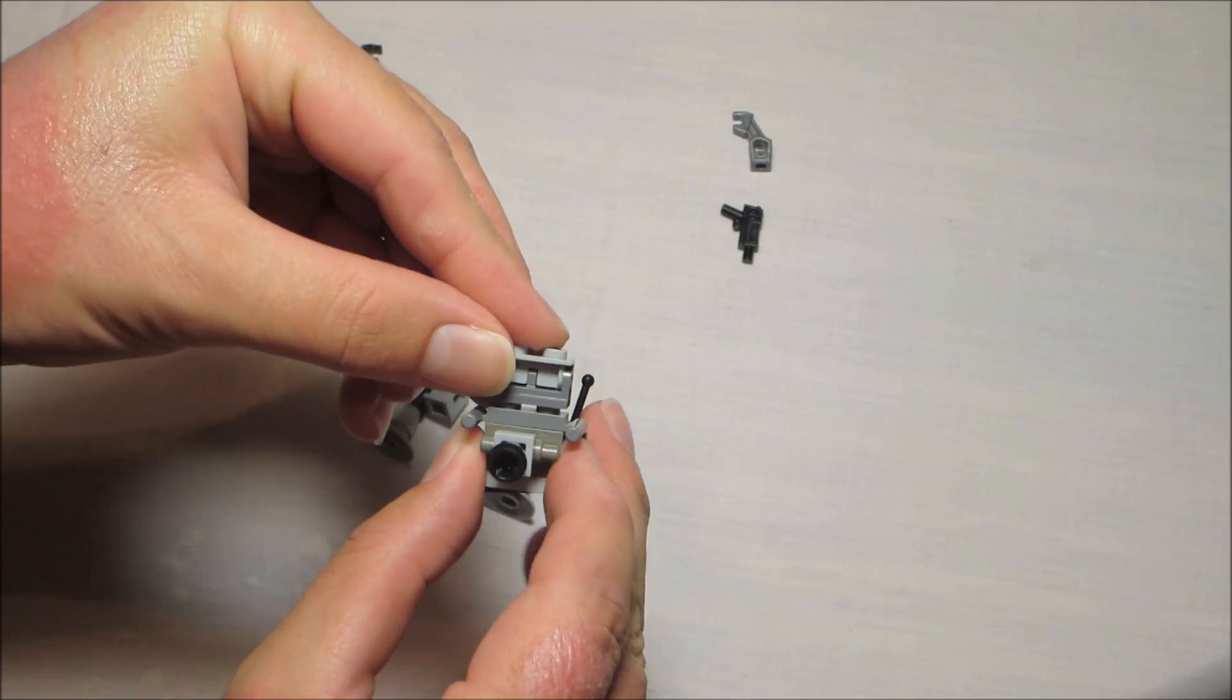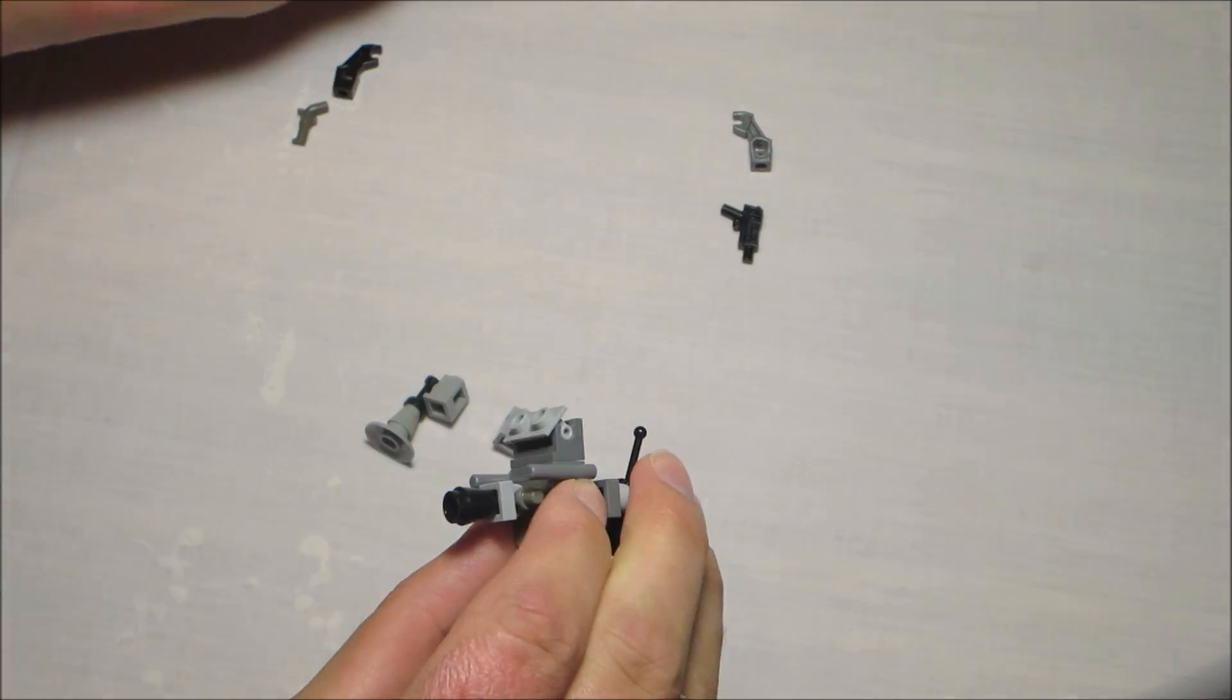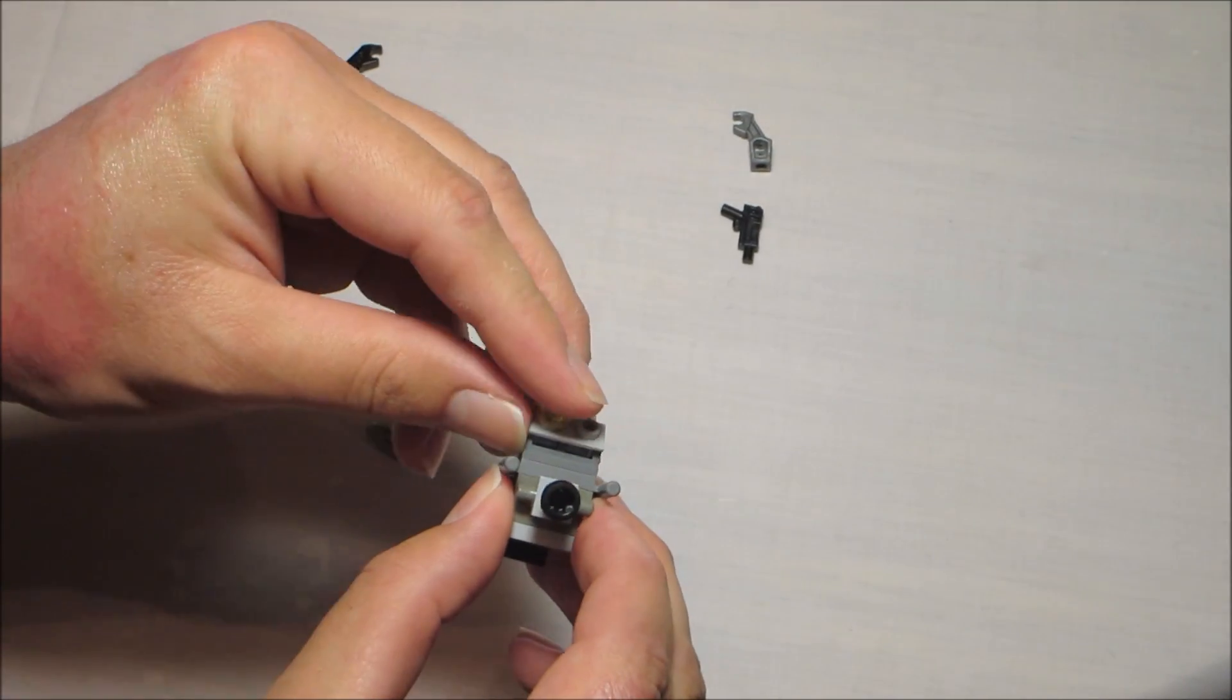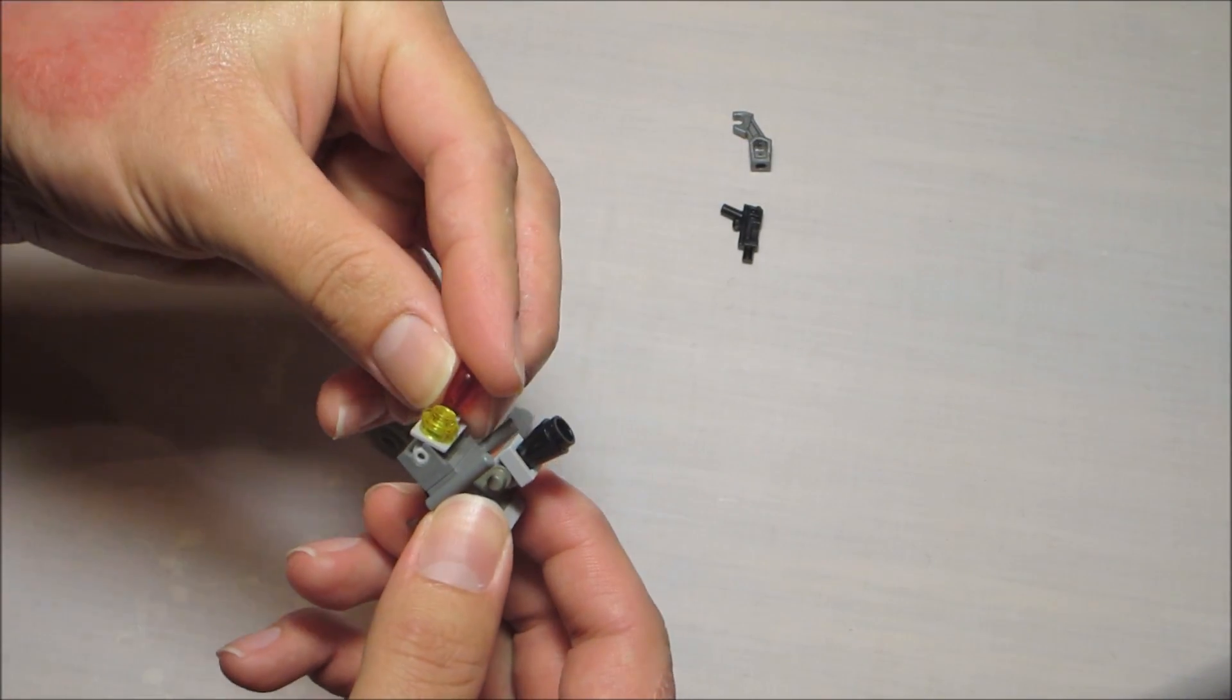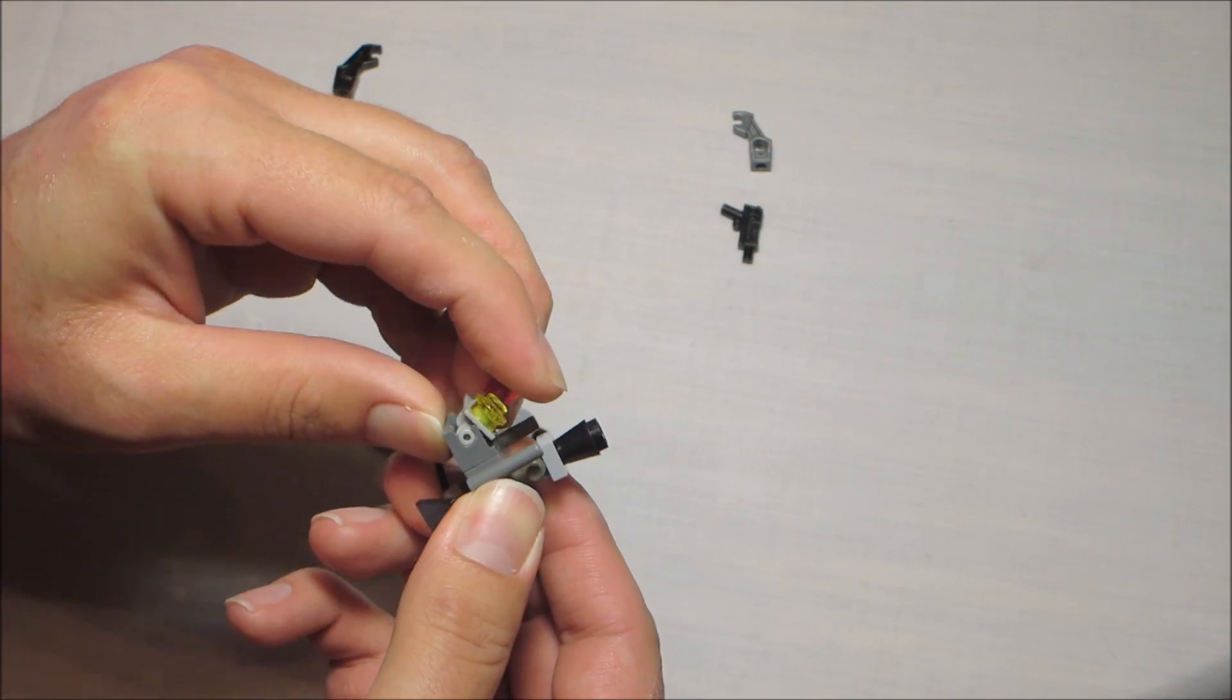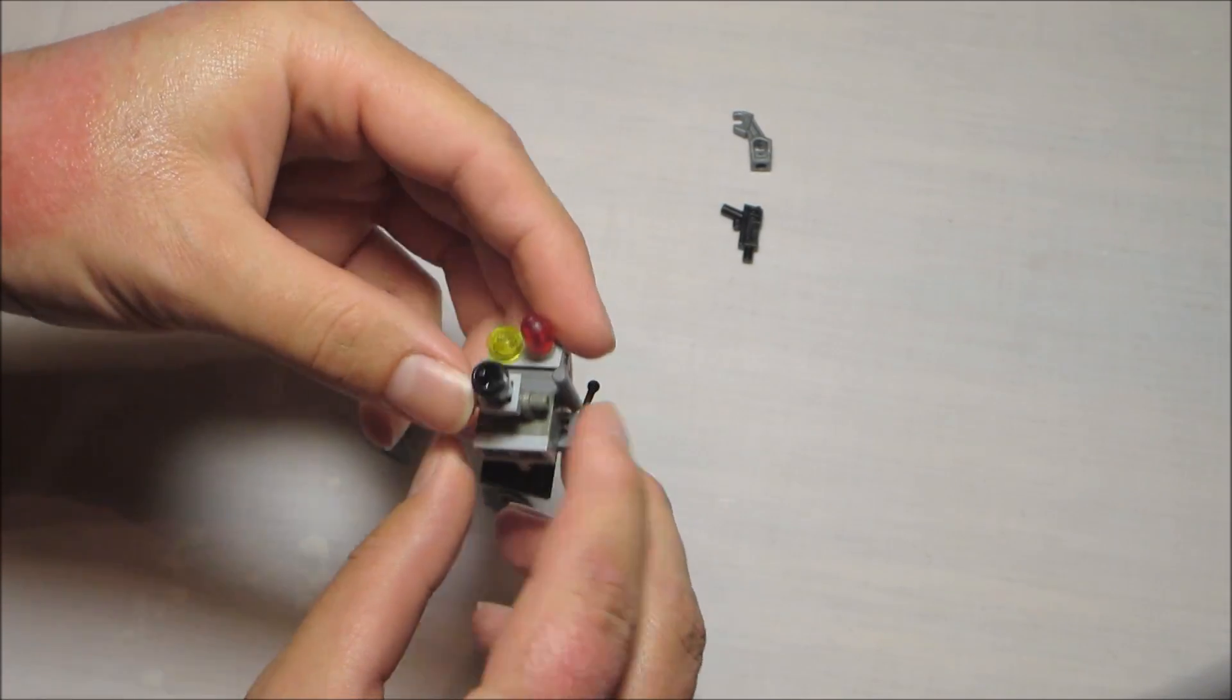Next we're going to attach the head. It's a 1x2 brick with a swivel plate. Here we'll attach some eyes or weapons, whatever you're choosing.